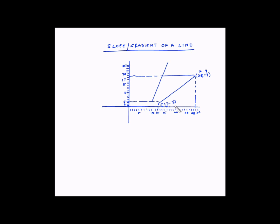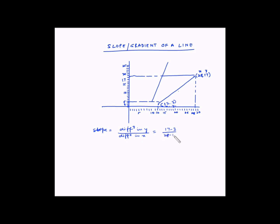So this is x1 = 12 and y1 = 3. Now if we have to calculate the slope of this line, the slope is calculated as the difference in y-axis coordinates divided by the difference in x-axis coordinates. So this is equal to (17 − 3) divided by (28 − 12), which equals 14 divided by 16, or in other terms, 7 divided by 8.